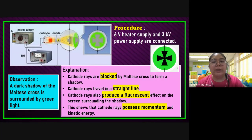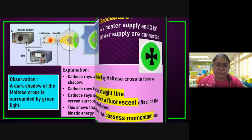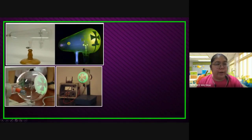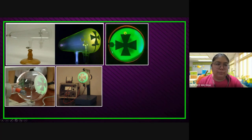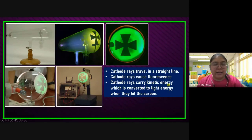For this situation, you see the green light means the EHT is already on. The energy conversion: kinetic energy converts to light energy. This is an example to show you for the cathode ray when it passes through the Maltese cross — after that, it produces a green light. So the characteristics: cathode ray travels in straight line. Number two: cathode ray causes fluorescence. Cathode ray carries kinetic energy, which converts to light energy when it hits the screen.